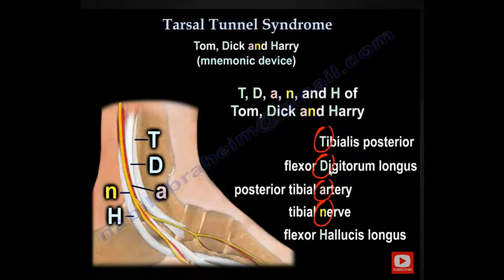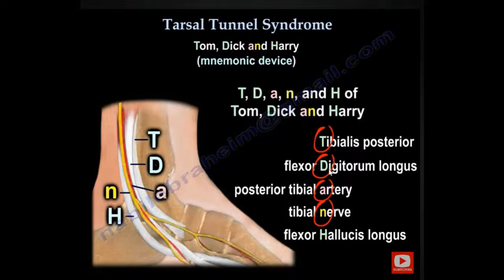How about Tom, Dick, and Harry? These are the names we give to the structures behind the medial malleolus. That will be the tibialis posterior, the flexor digitorum longus, and then the artery and the nerve — the posterior tibial nerve. Because we're talking about the tarsal tunnel, and Harry is the flexor hallucis longus, a very important muscle in the foot.